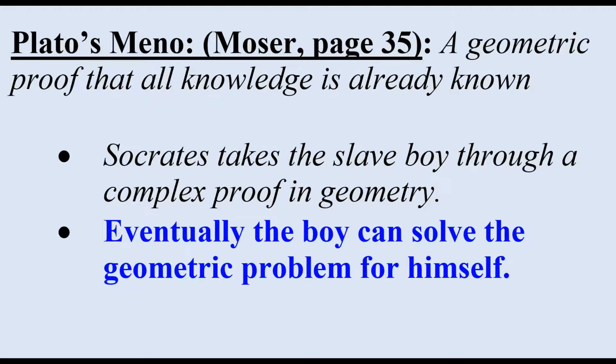Meno is understandably skeptical that all knowledge is really remembering, but Socrates claims he can prove it. Socrates calls a boy who had been a slave in Meno's house since his birth, so Meno knows that the child had never been educated to understand the principles of mathematics.